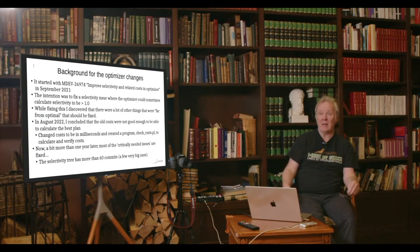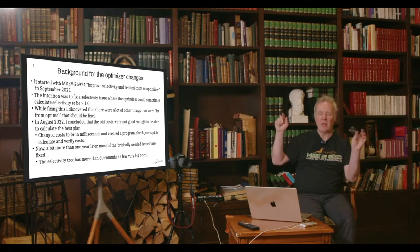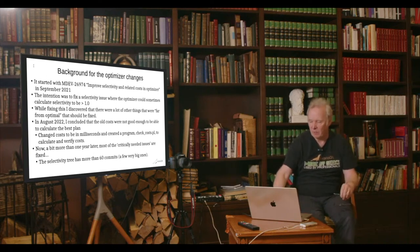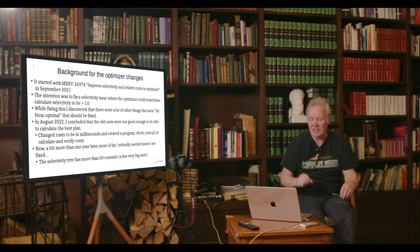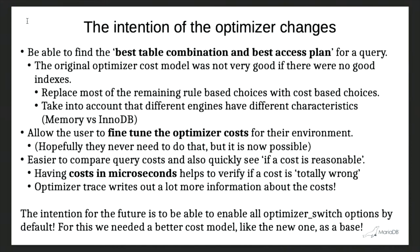Almost one year later I noticed that most of the bugs are fixed, but I still couldn't get the cost to work — to get the optimizer to choose the right plan. So something had to be done. I changed all the costs to be in milliseconds instead of approximate I/O units, and that has helped me tremendously. This task was completed yesterday. It's about 60 commits, some very big ones, and everything is available and will hopefully be in MariaDB 11.0 sometime next week.